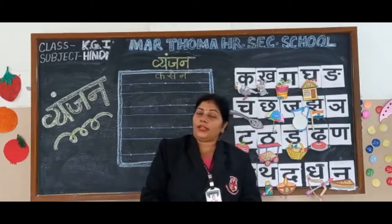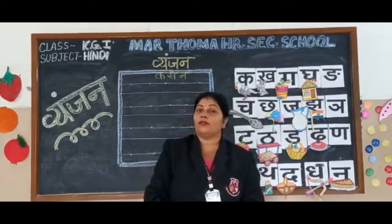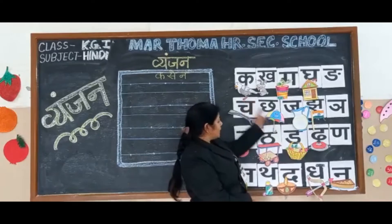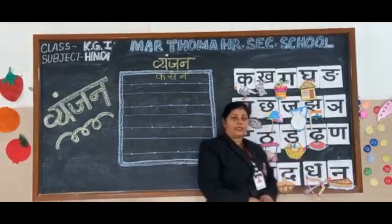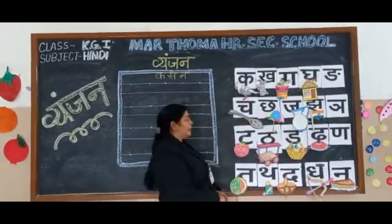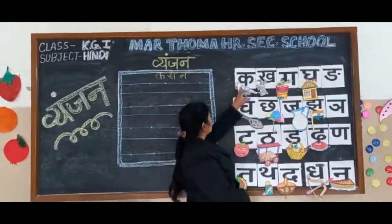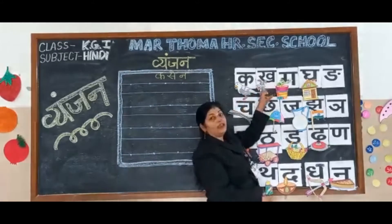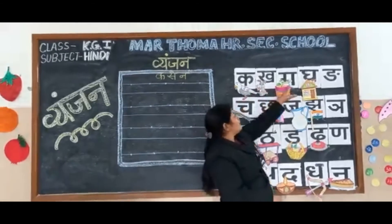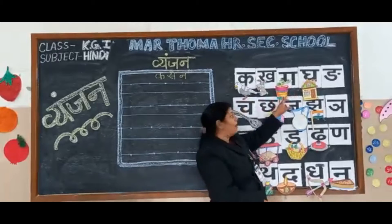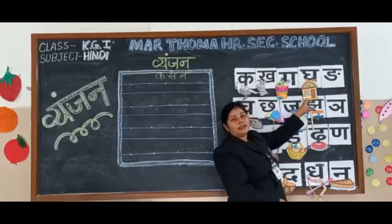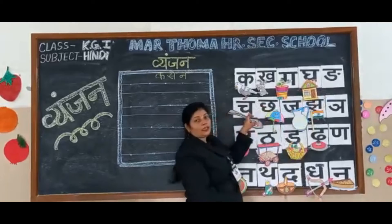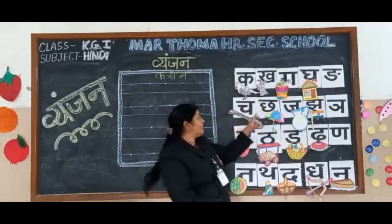Before we do writing work, first we will revise Vyanjal Kaase Nathar. So shall we start? Say with me: Ka se Kabuter, Ka se Kalbosh, Ka se Gamla, Ka se Gal, Kali. Cha se Chamaach.